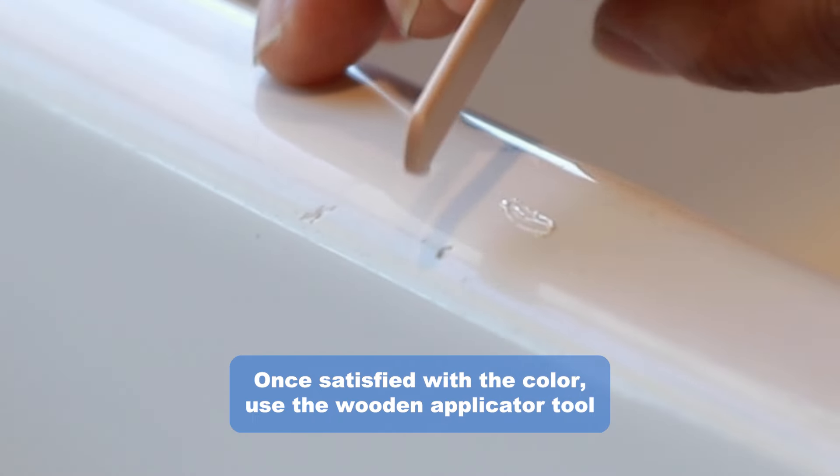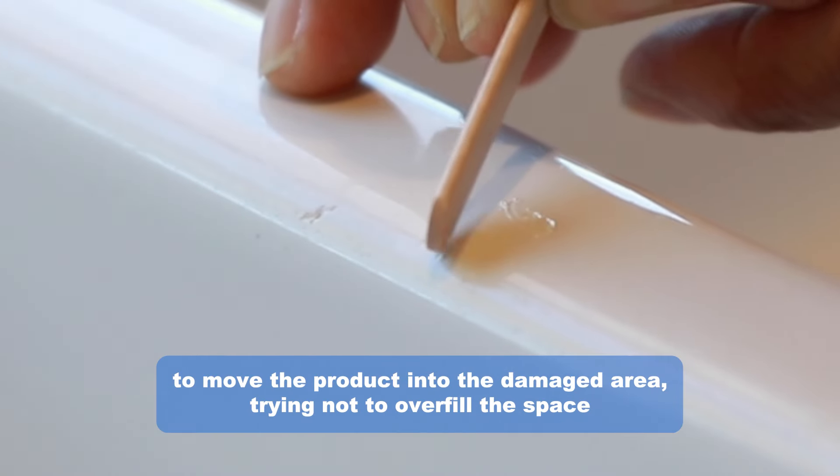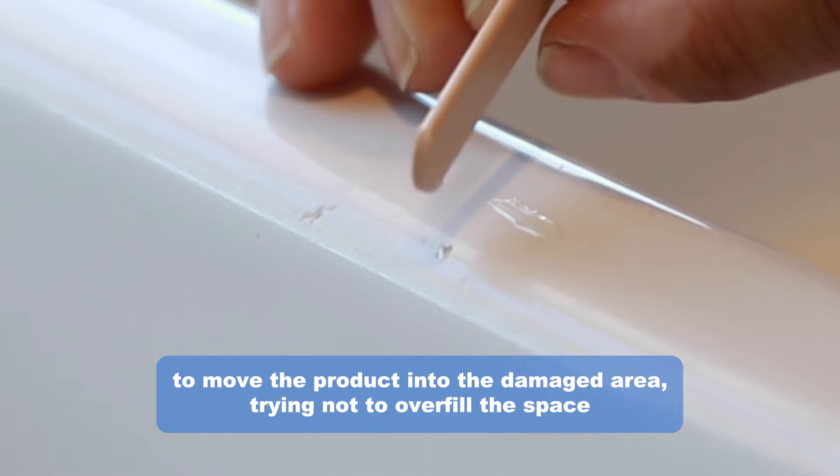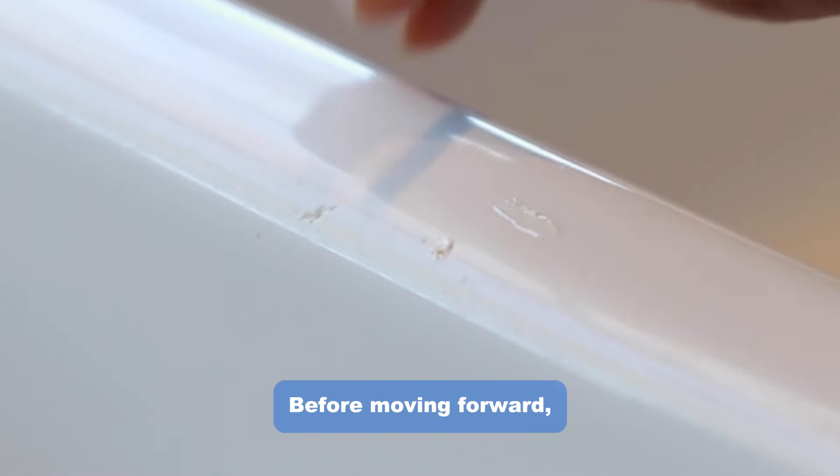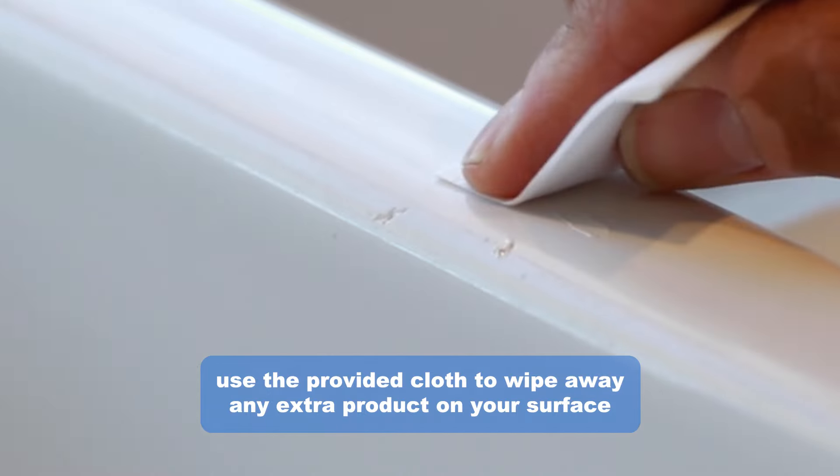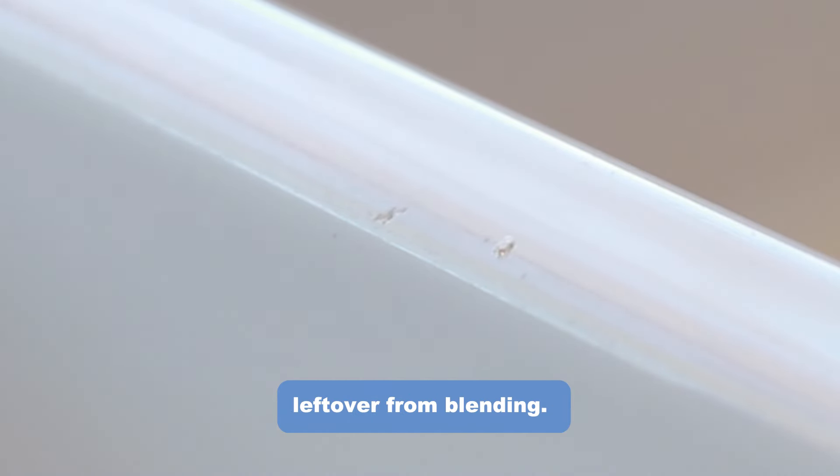Once satisfied with the color, use the wooden applicator tool to move the product into the damaged area, trying not to overfill the space. Before moving forward, use the provided cloth to wipe away any extra product on your surface left over from blending.